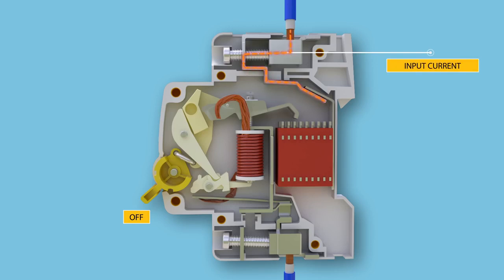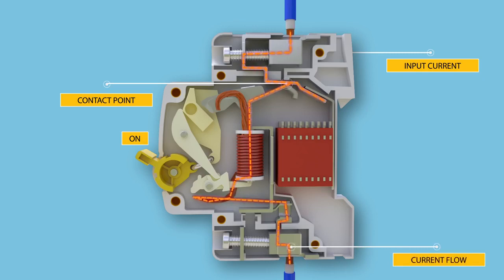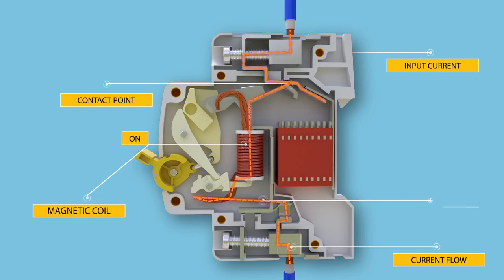Under normal working conditions, the circuit breaker works when we switch the operator manually from position off to position on. The electric current carrying path, as shown in the animation, goes: first the incoming terminal, then the contact point of moving and fixed contacts, then the magnetic coil, then the bimetallic strip, then the outgoing terminal — all arranged in series.